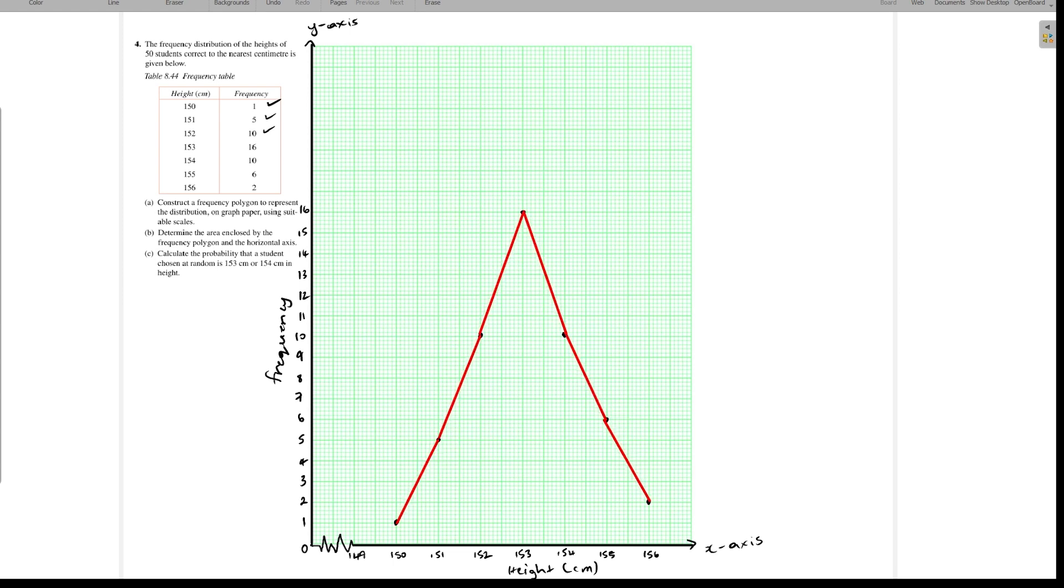So to close off, on both ends it would be the point before or after the initial and the end point. The starting point is 150, so the point before that would be 149, and that is where we would start or close off our frequency polygon. The next point here would be 157, and that is where we would close off on this end.